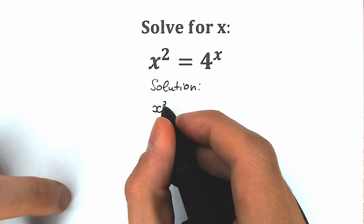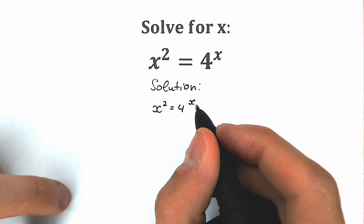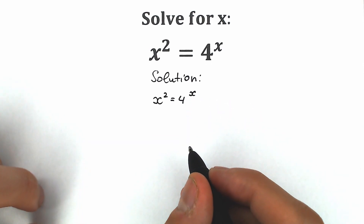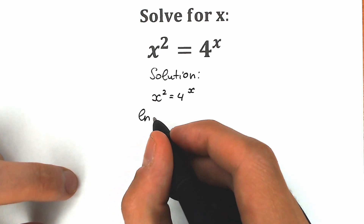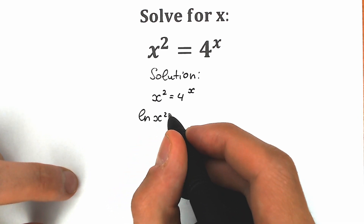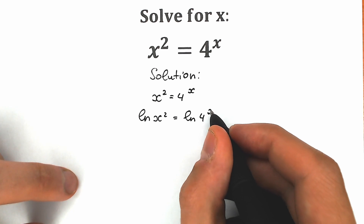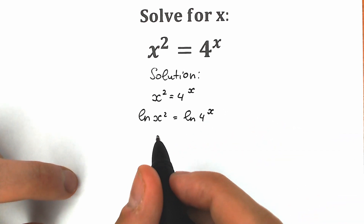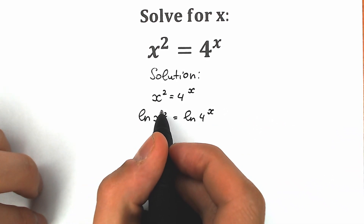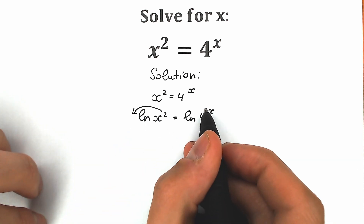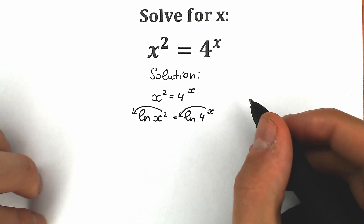So we have our question x² equal to 4 to the power x. First of all, let's apply natural log on both sides. We have natural log of x² equal to natural log of 4 to the x. And why apply natural log on both sides? Because this 2 and this x will come down, because of the main log property.